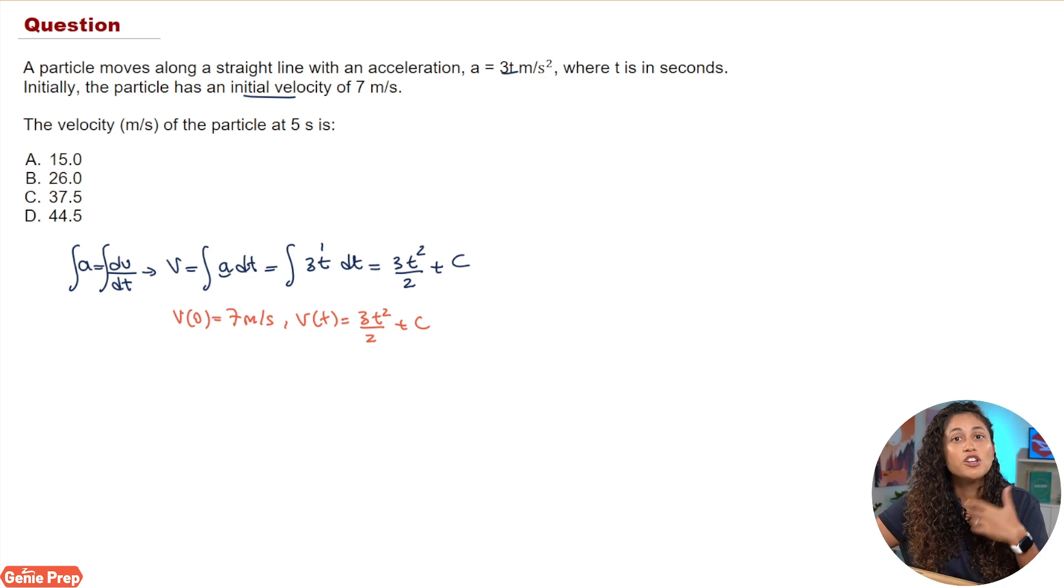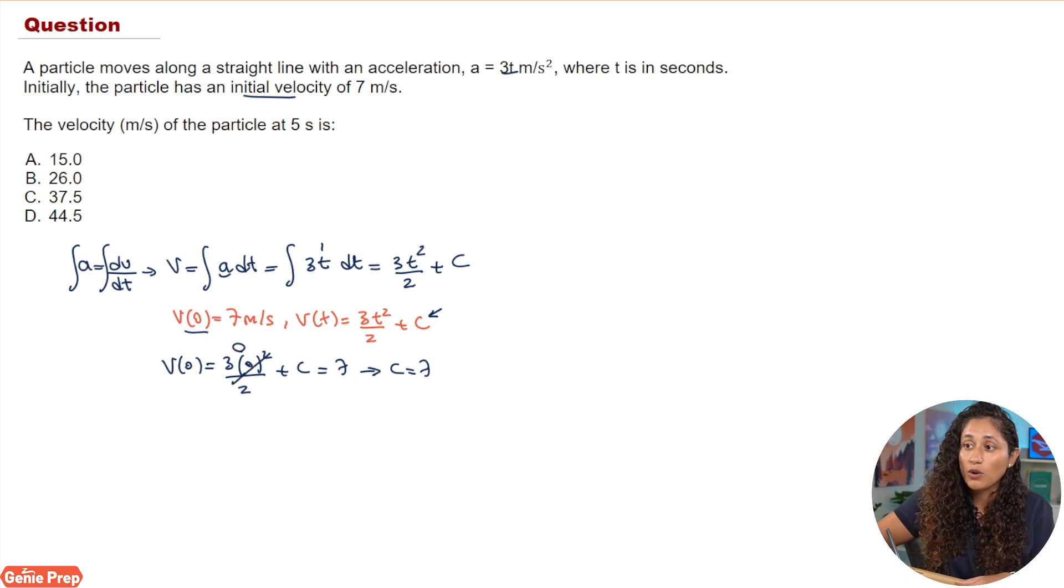We're going to use these two to determine C. We're going to do v of 0 equals 3 times 0 squared over 2, so we're going to substitute zero into this equation here, plus C, and this equals 7 because we said that v of 0 equals 7. If you solve for this you're just going to get 7 because this term here goes to zero. So C equals 7. Now our velocity equation v of t is going to be equal to 3t squared over 2 plus 7.